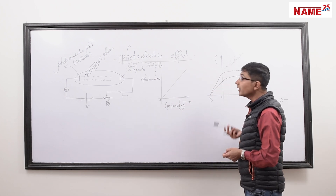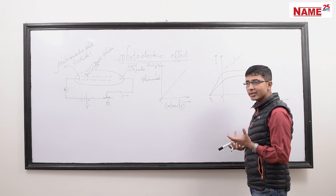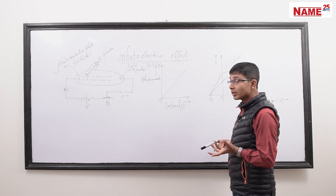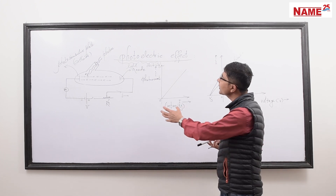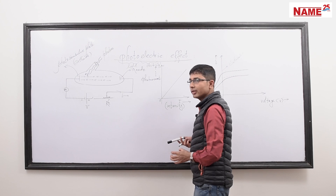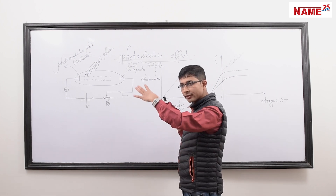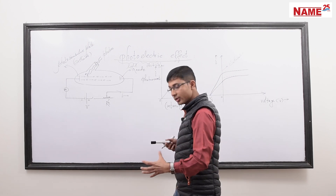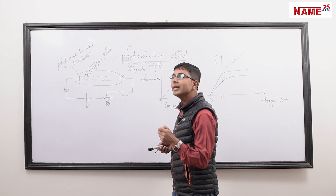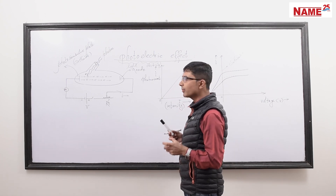Einstein formulated the photoelectric equation and was awarded the Nobel Prize in Physics for it. It would be interesting to note that Einstein won the Nobel Prize specifically for the photoelectric effect, and Millikan provided the experimental proof of Einstein's equation.